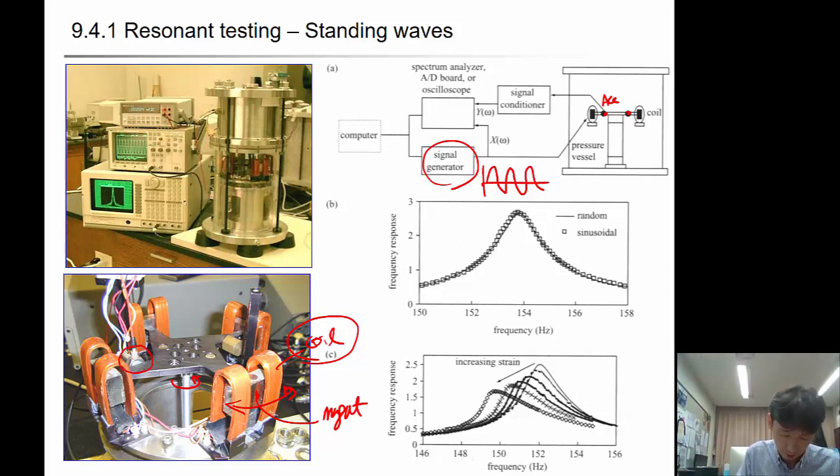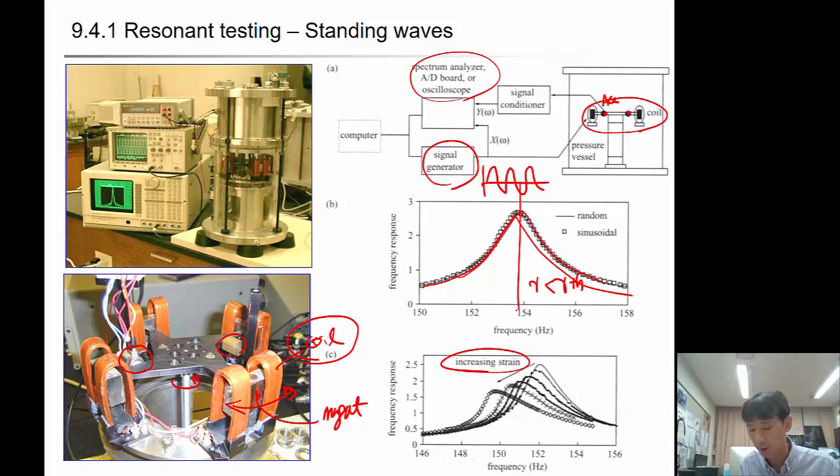At the same time, you can measure the acceleration at the driving cap. You can see there are accelerometers, one or two at both ends. This will be conditioned and collected in the oscilloscope or AD board. From the amplitude response or frequency response, you can plot the frequency response of your specimen plus driving cap. This frequency response changes with strain. When strain is small, it will be symmetric with resonant frequency at center. But as gamma increases, it becomes more nonlinear.